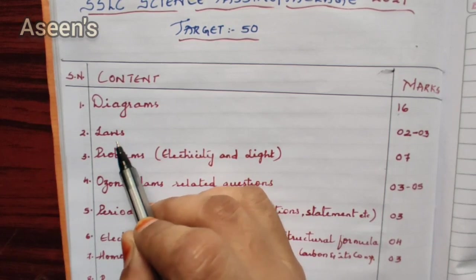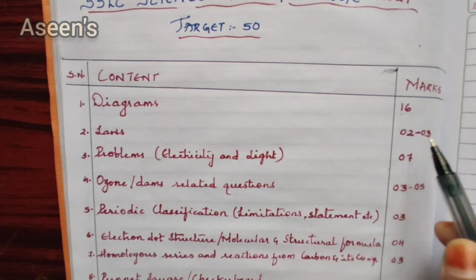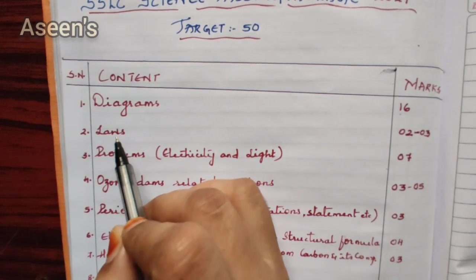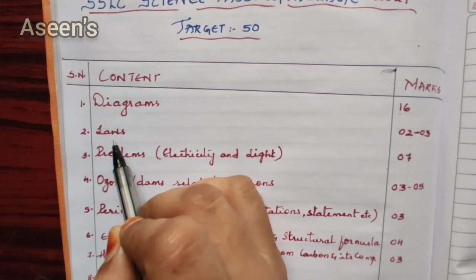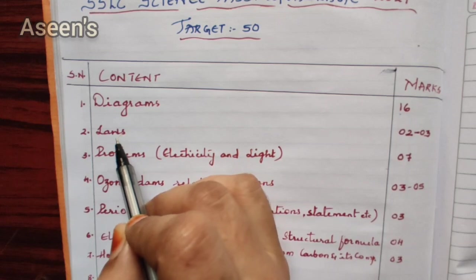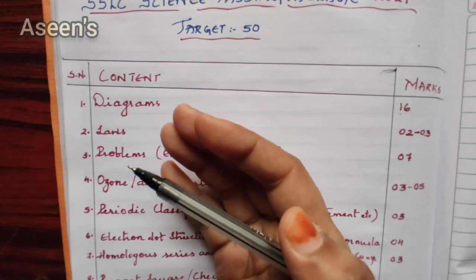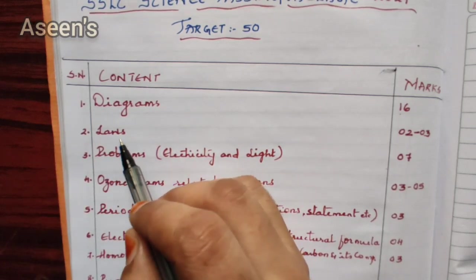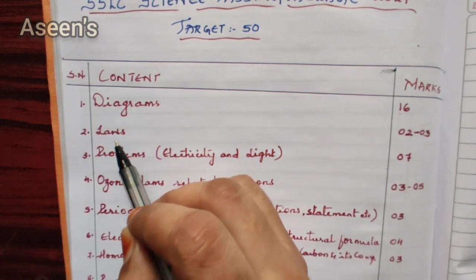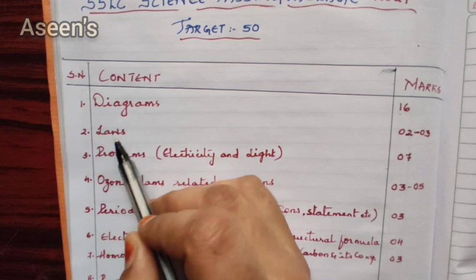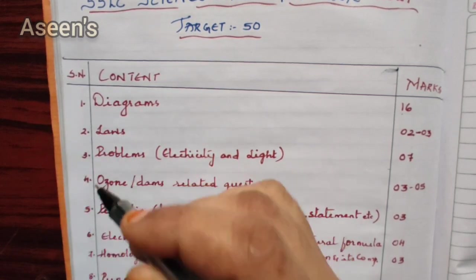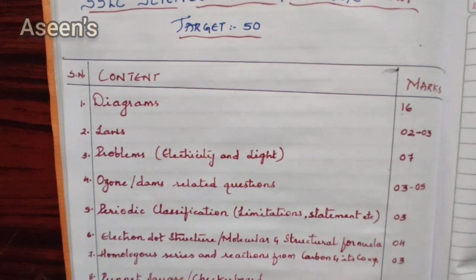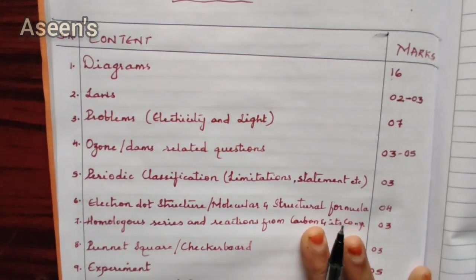Next comes laws. I have already covered a complete list of laws with full explanations. I can assure you two to three marks guaranteed for law-related questions. They have directly asked laws, asked mathematical equations, and in fact asked more than one law in one paper according to the model question paper. I will give the link for this laws video in the description box.